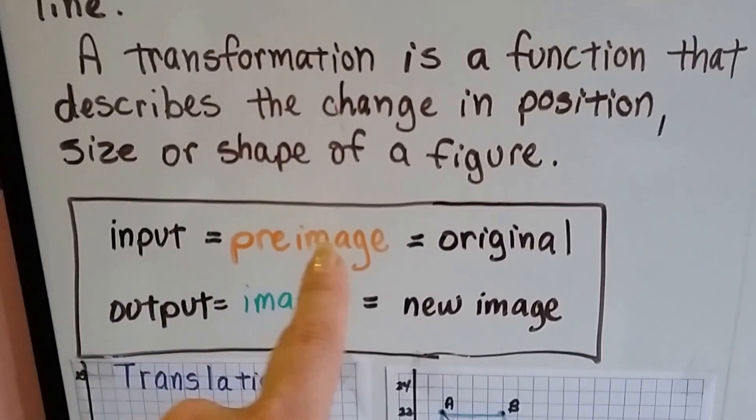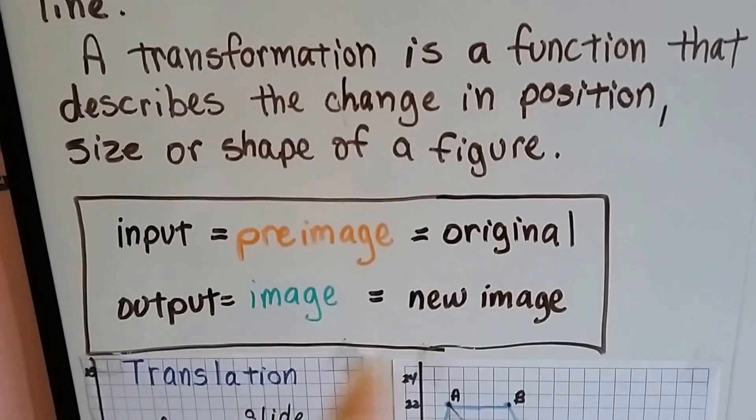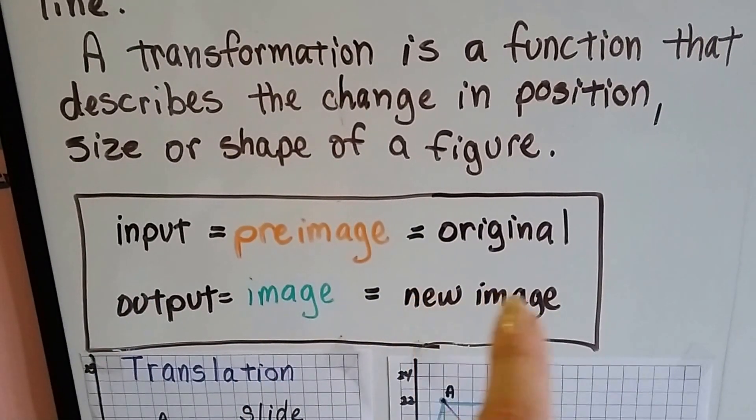The input is called the preimage, that's the original shape or figure. The output is called the image, that's the new shape or figure.